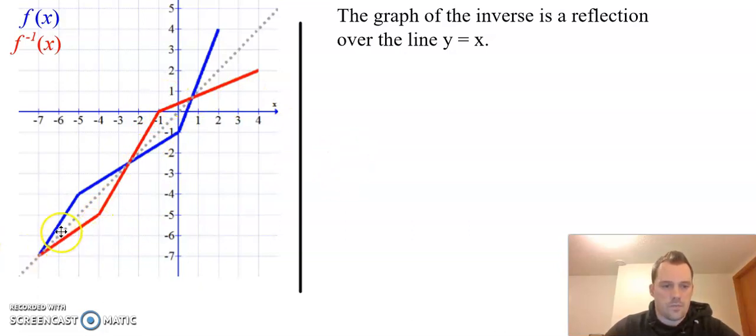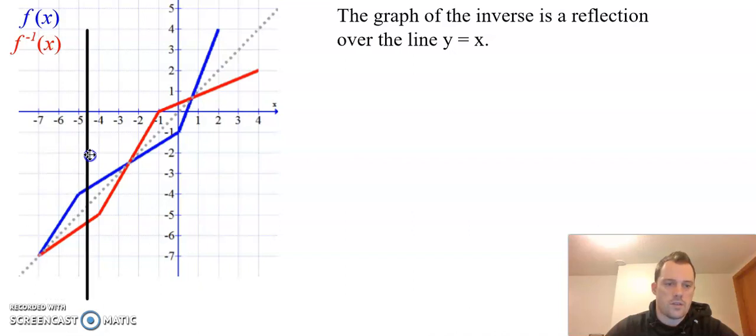Notice how our original function, the blue one, we take a vertical line, maybe our pencil, and we bring that across the entire graph. We see that at no point does our vertical line touch the blue graph more than once.